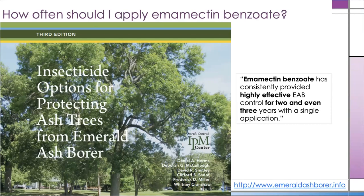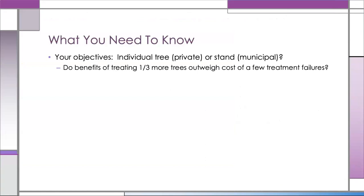Here's what you need to know. First, consider your objectives. Are you trying to minimize the death of individual trees, or trying to keep as much of your ash stand alive as possible? If you are trying to keep every single treated tree alive, you can have a very low tolerance for risk. But if you're trying to stretch your municipal dollars, you have to ask yourself: does the benefit of treating a third more trees outweigh the cost of a few potential treatment failures?